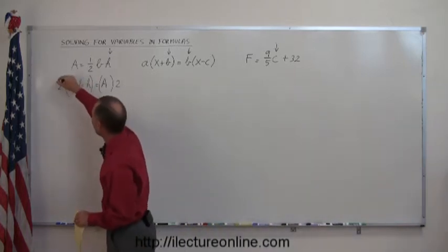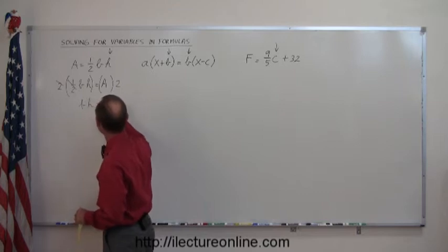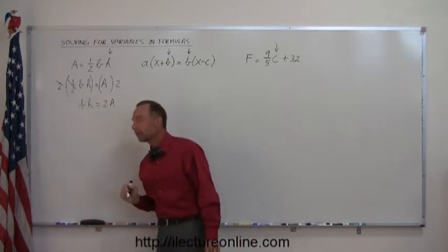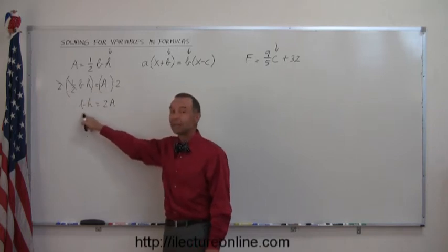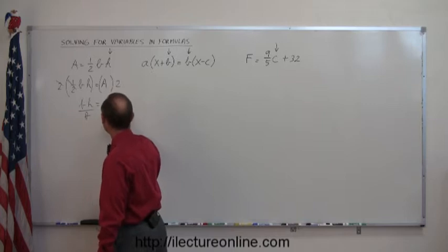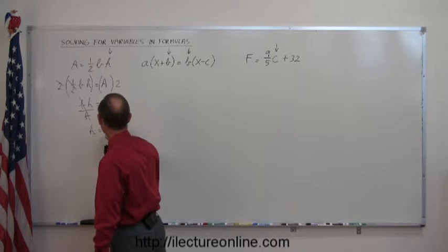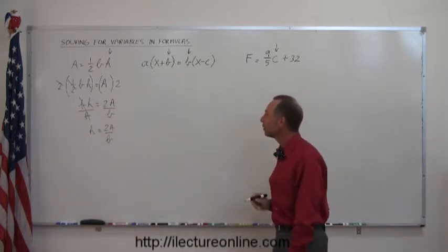By multiplying the left side by 2, the 2 cancels the one-half, you're left with BH, and on the right side you simply get 2 times A. We're still solving for H, so here I look at the left side, I have an H and a B, I want to get rid of the B, I divide the left side by B, I divide the right side by B, notice that cancels out, and H equals 2A over B. That's how you do that one.